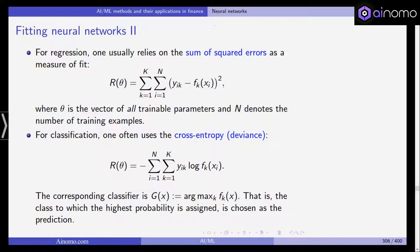For classification you usually use the so-called cross entropy or deviance which is you take your predictions f_k based on the features. You take the logarithm, you multiply it with the observed values for the response y_i,k. Usually this will be 1 or 0 and thus you get the errors and then you also add it all up and take the negative of this. Now the corresponding classifier in this case is usually the argmax function that is the class to which the highest probability is assigned is chosen as the prediction.